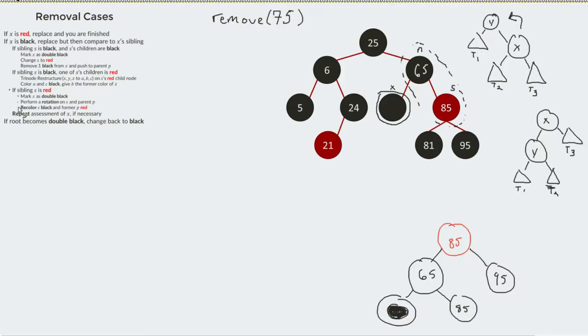Because you can see that next statement is that I recolor s. Remember, this is still s. I recolor it black and I'm going to recolor the former parent, which happens to be n, to be red. So 85 is going to become black. And that red I was talking about starts to move its way downward. And so 65 gets to become red.